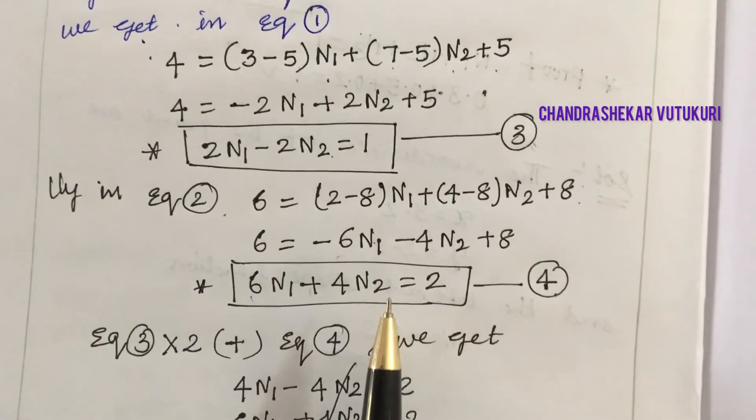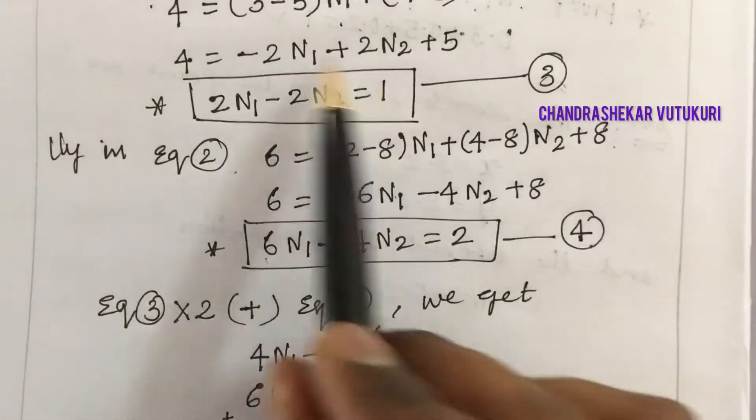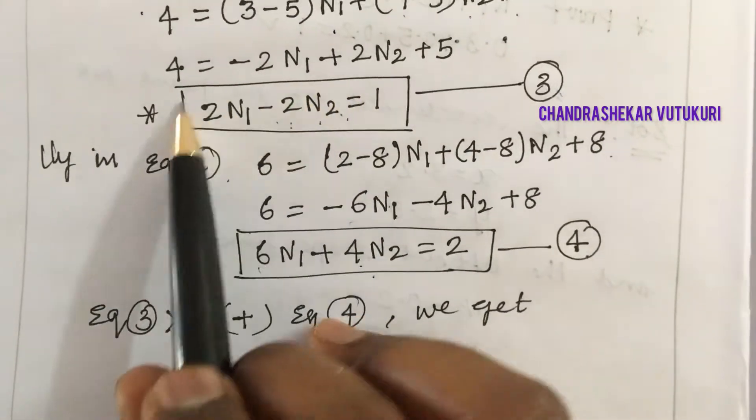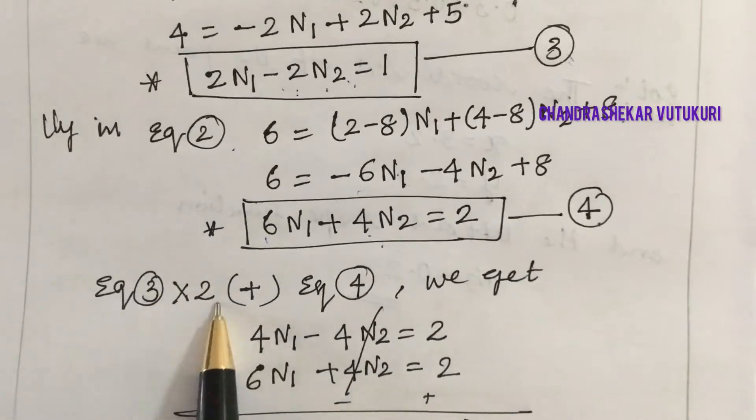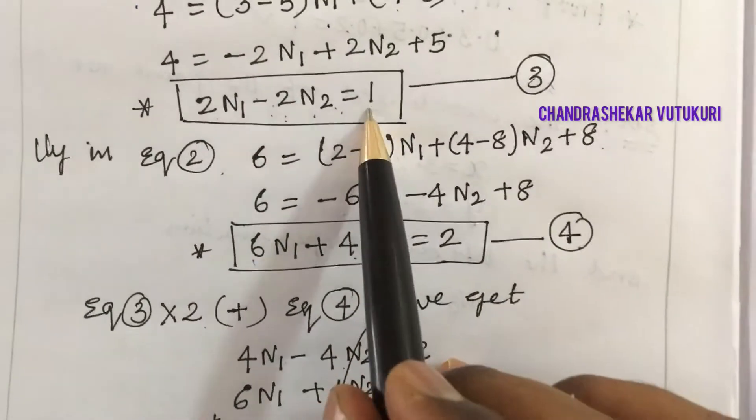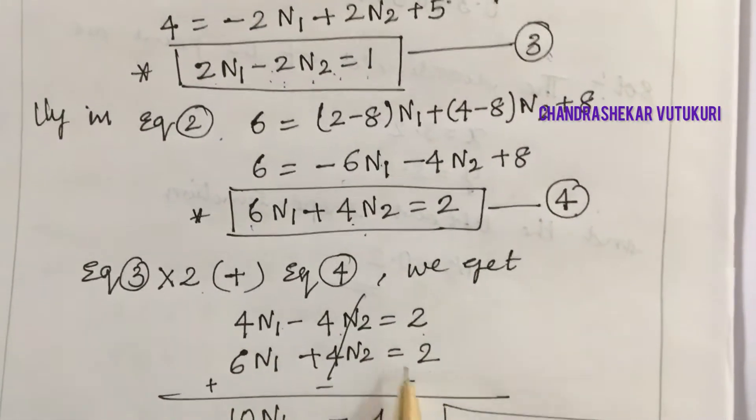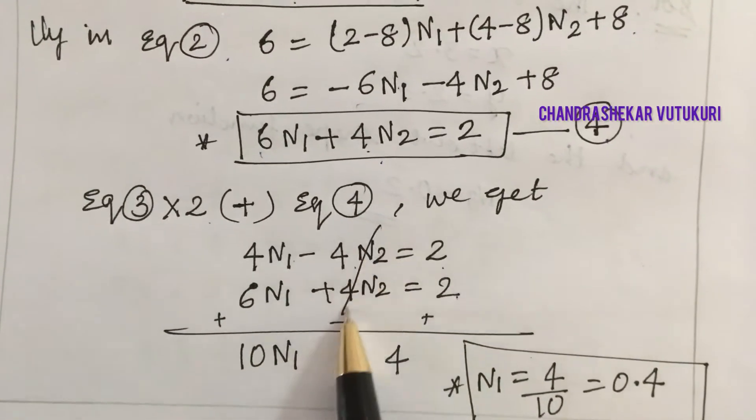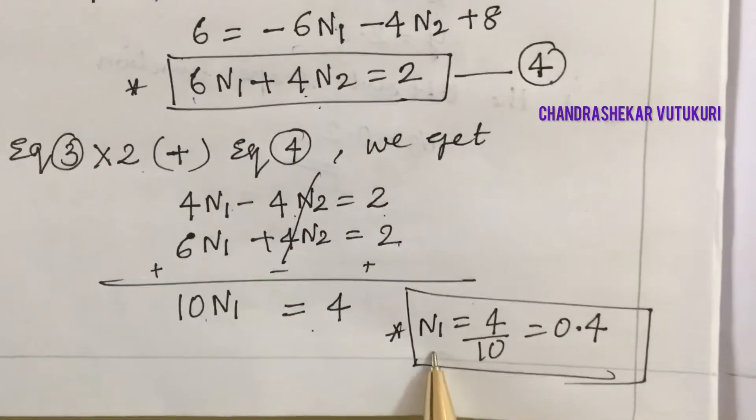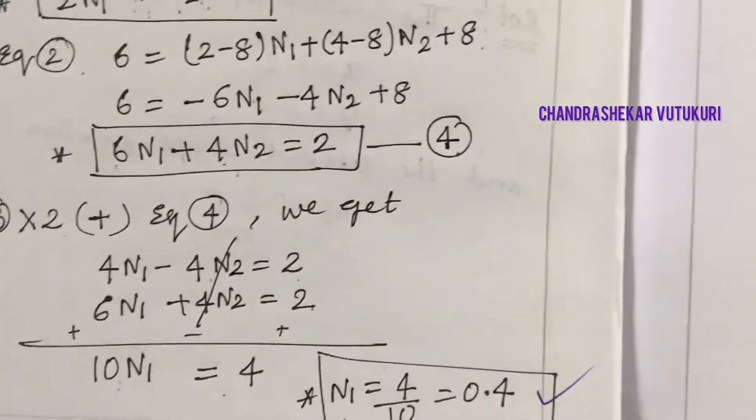From these two equations we need to work out the shape functions N1 and N2. I'm multiplying equation 3 by 2 to get 4N2 positive here and minus 4N2 there. So 2 times 2 is 4N1 minus 4N2 equals 2. Equation 4 remains: 6N1 plus 4N2 equals 2. Upon calculation, 6 plus 4 is 10N1 equals 4. Therefore N1 is 4 upon 10, which is 0.4.